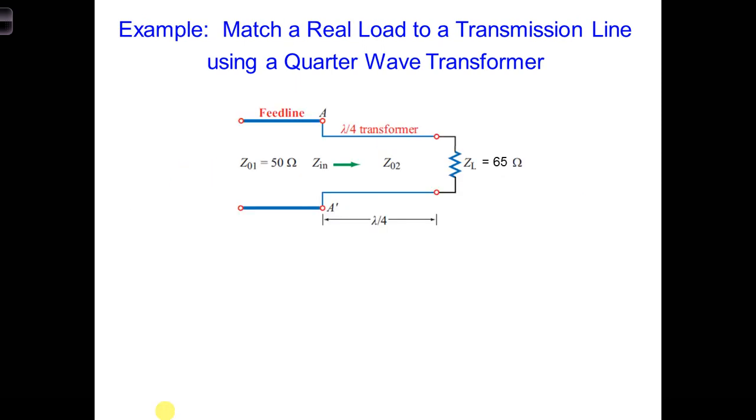Now it's your turn to design a quarter wave transformer. Determine Z naught 2, the characteristic impedance of a quarter wave section of transmission line that will match a 65 ohm load to a feed line with a characteristic impedance of Z naught 1, which is equal to 50 ohms.